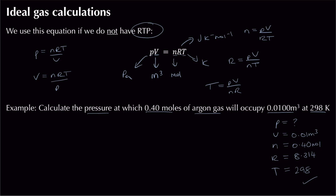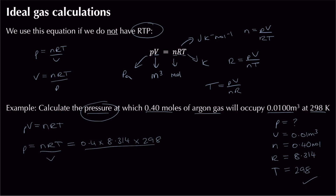Rearranging PV = nRT to get P = nRT/V, I substitute: (0.4 × 8.314 × 298) / 0.01. Putting that in the calculator gives, to three significant figures, 99,100 pascals. You get one mark for rearranging, one for substituting values, and one for the correct answer.